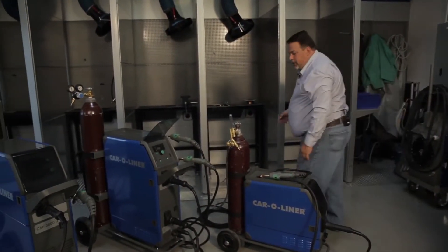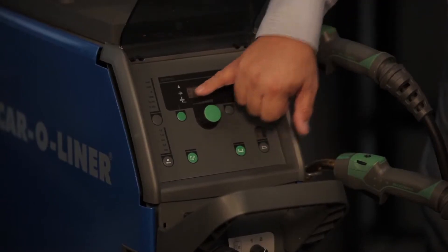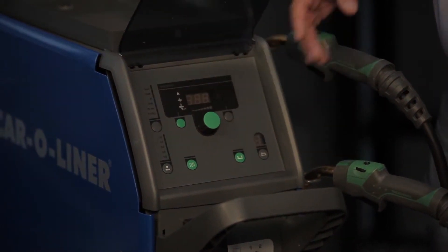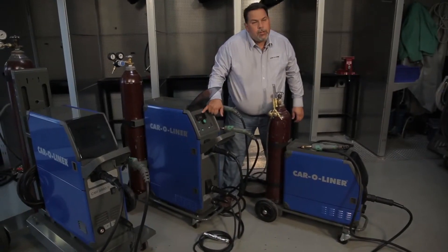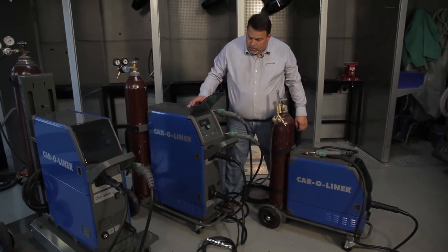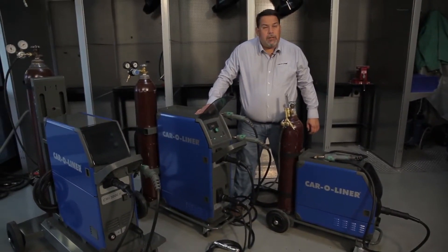The control units, as you can see, are very user friendly. We have our wire selection and wire type. Our display here shows us the amperage, voltage, wire speed, and thickness.